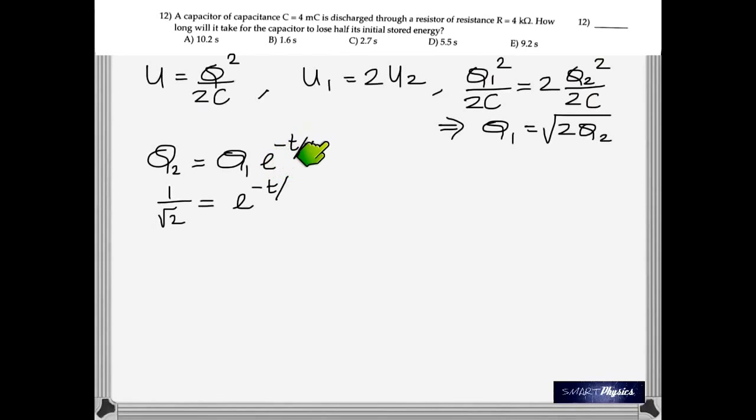Now notice that this becomes 16. Because the capacitance is given in millicoulomb. It's 10 to the negative 3. And the resistance is given in kilo ohms. Which is 10 to the positive 3. So they get cancel. That's how you get 16. Now here Q2 has been substituted as, or Q1 has been substituted as square root 2 Q2. Take the natural log of 1 by square root 2. And calculate you get 5.5 seconds.